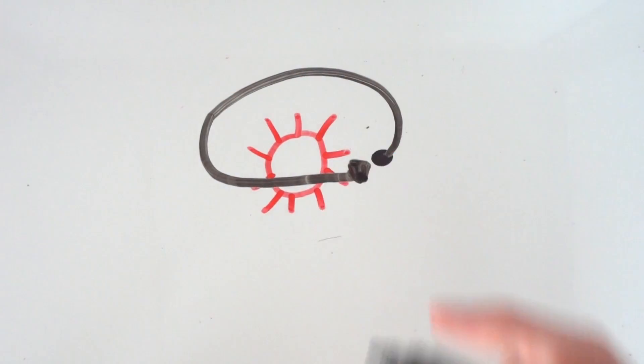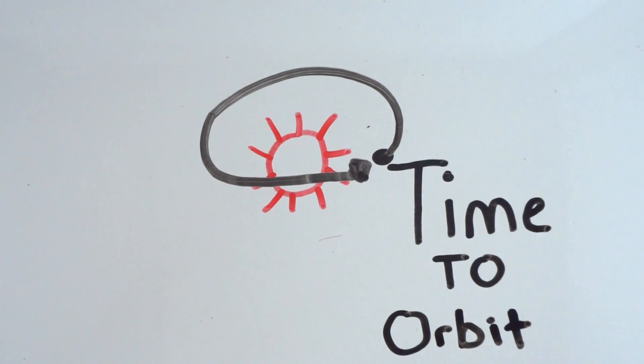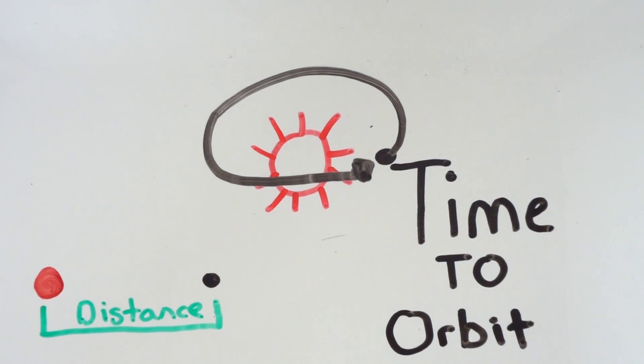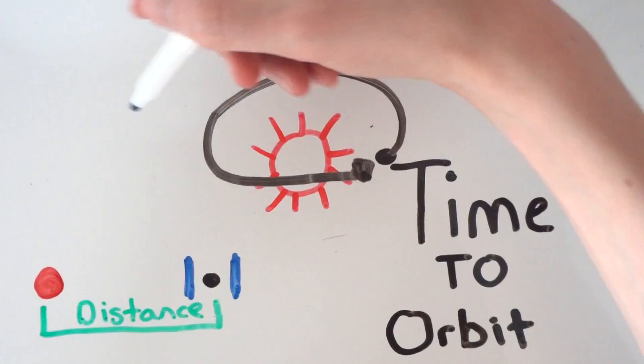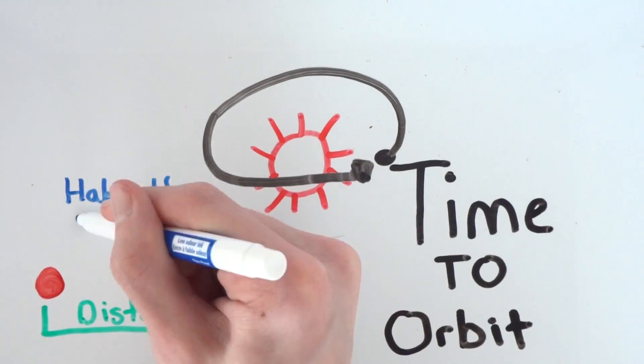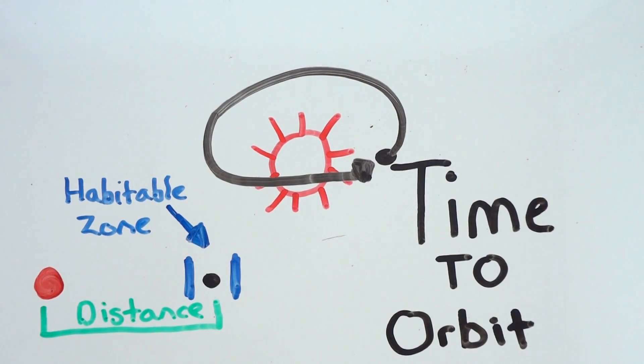Then by working out how long it takes to orbit the star, you can work out how far away the planet is, and they managed to find planets which were a similar size to Earth and in the habitable zone, which means they have the right conditions to support liquid water on the surface of the planet.